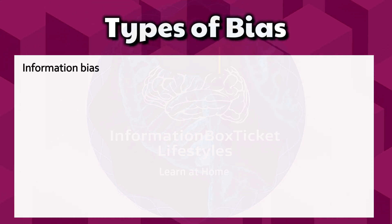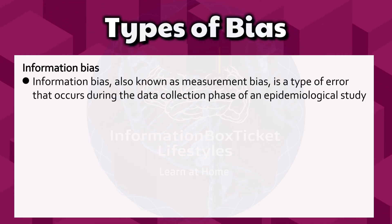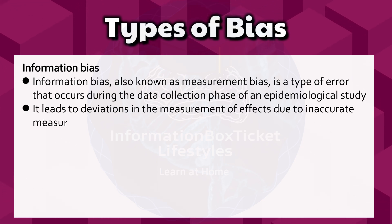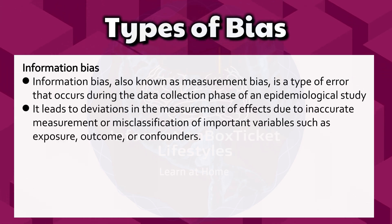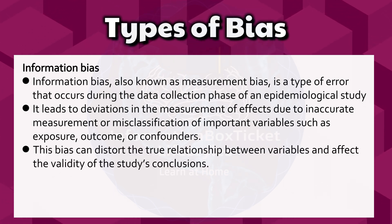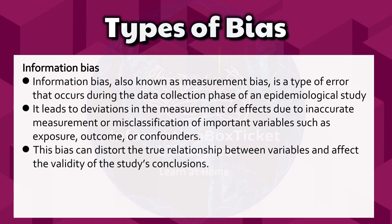Information bias, also known as measurement bias, is a type of error that occurs during the data collection phase of an epidemiological study. It leads to deviations in the measurement of effects due to inaccurate measurement or misclassification of important variables, such as exposure, outcome, or confounders. This bias can distort the true relationship between variables and affect the validity of the study's conclusions.